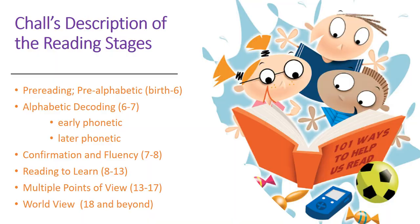Jeanne Chall was one of the pioneers in describing reading stages — hers was pretty much the foundational work. Her first stage is the pre-reading or pre-alphabetic stage, sometimes called the logographic stage, from birth to around age six. The ages are rough estimates since all children develop at different rates. Then they move into the alphabetic decoding stage from about ages six to seven, divided into early phonetic and later phonetic stages. Don't worry that this makes no sense yet — I'm going to explain them.